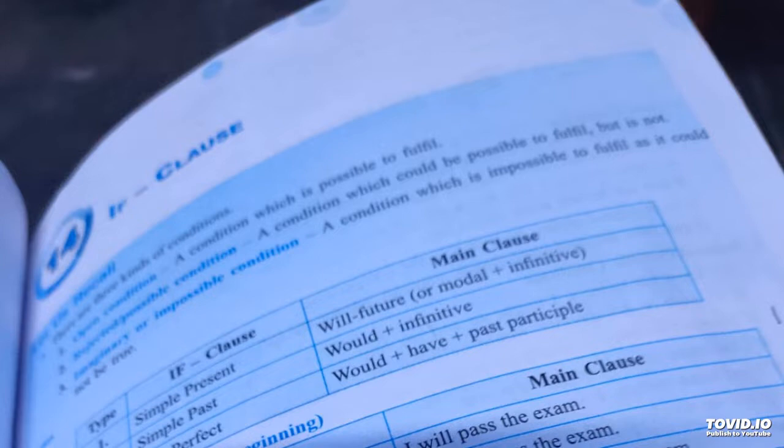At the beginning, if I study, I will pass the exam. If I studied, I would pass the exam. If I had studied, I would have passed the exam.